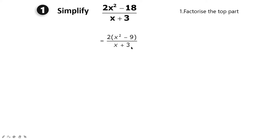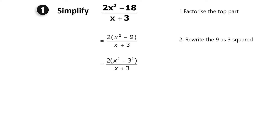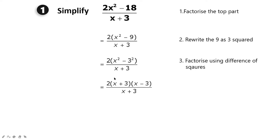The second step is to write 9 as 3², giving us 2(x² - 3²) over (x + 3). The next step is to factorize using the difference of squares. The expression in brackets becomes (x + 3)(x - 3), so we now have 2(x + 3)(x - 3) over (x + 3).